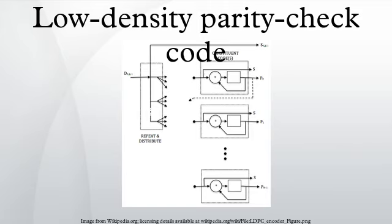In information theory, a low-density parity check code is a linear error-correcting code, a method of transmitting a message over a noisy transmission channel.